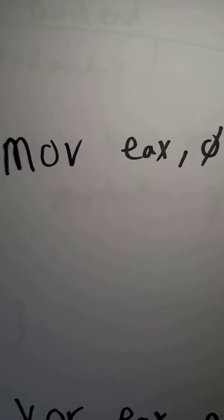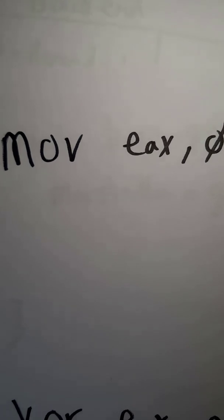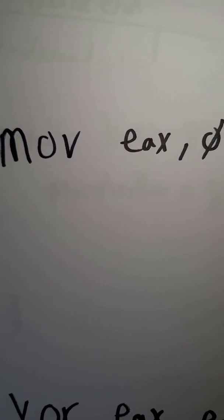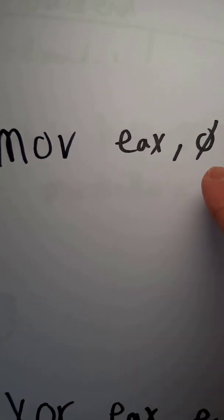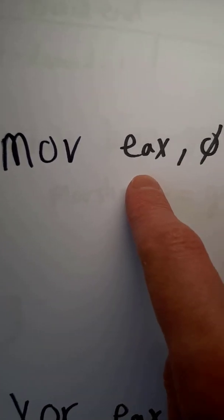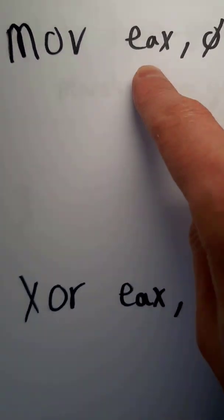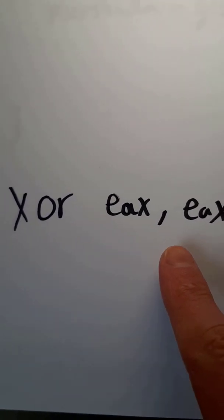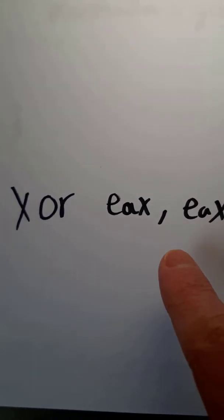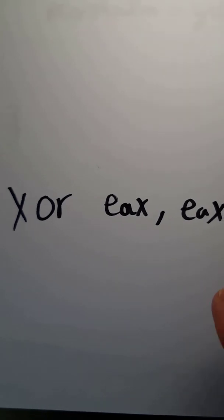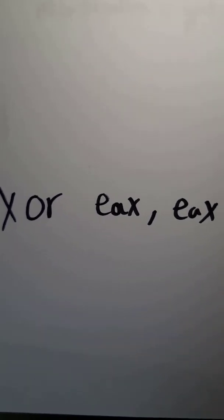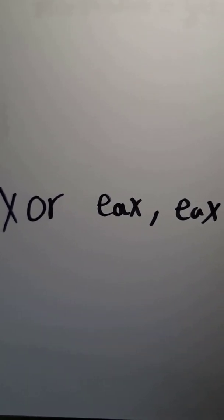An example of a target dependent optimization is in x86: if you want to zero out a register, you might think you would just move zero into the register, but it's actually better to XOR the register with itself because the instruction encoding turns out to be smaller and therefore easier on the instruction cache.